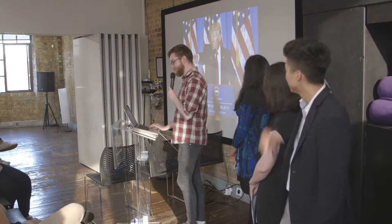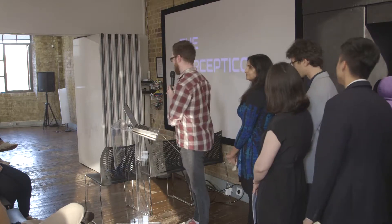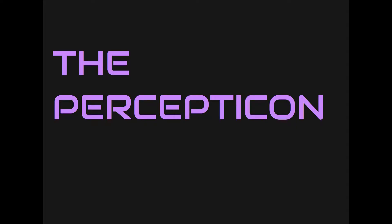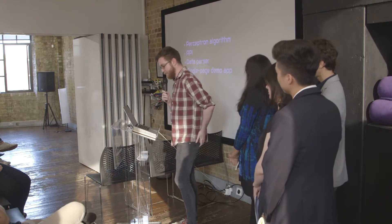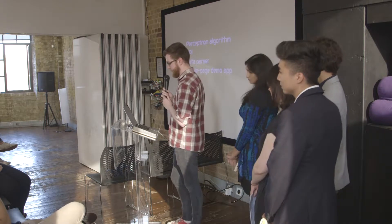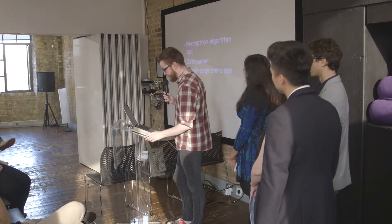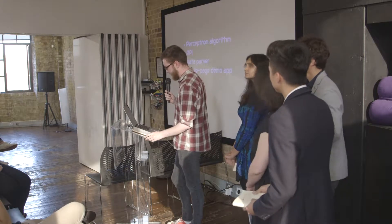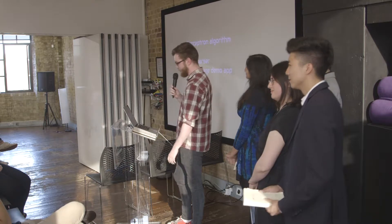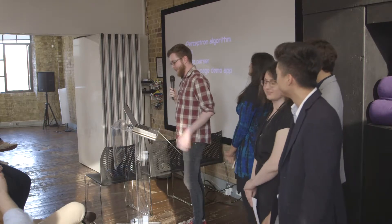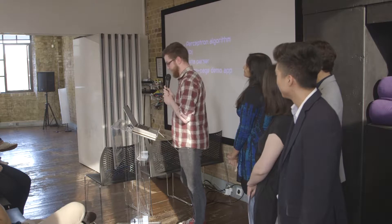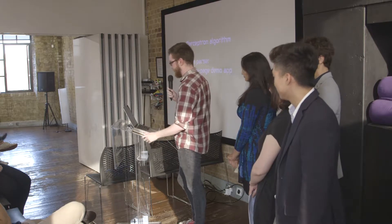We have a solution. Introducing the Percepticon. It is a program that uses machine learning to determine an article's quality by looking at its headline. We built the learning algorithm from scratch. We created and deployed an API so that other developers can use the Percepticon. And, thanks to our friends at sites such as BuzzFeed and Cosmopolitan, we had no shortage of terrible data to feed to the Perceptron for training. Finally, we built a single-page app to demonstrate it. I'll now hand you over to Ginny, who will take you through a demo.